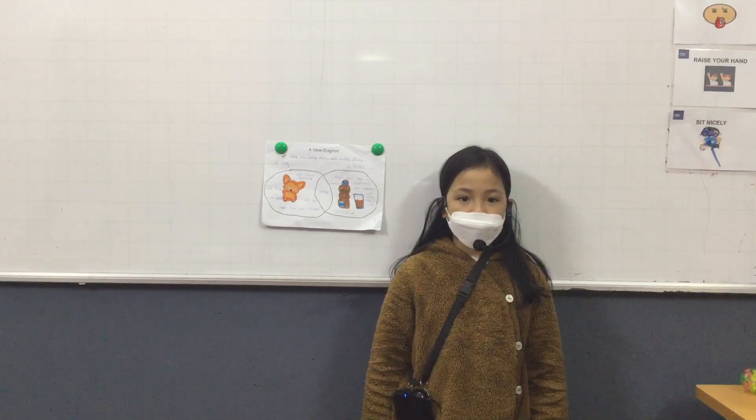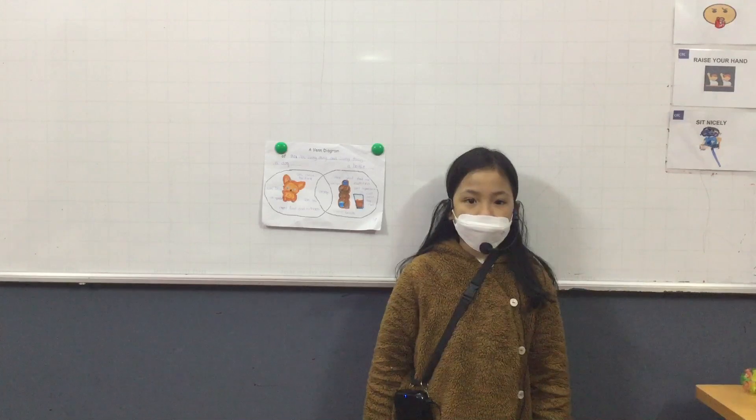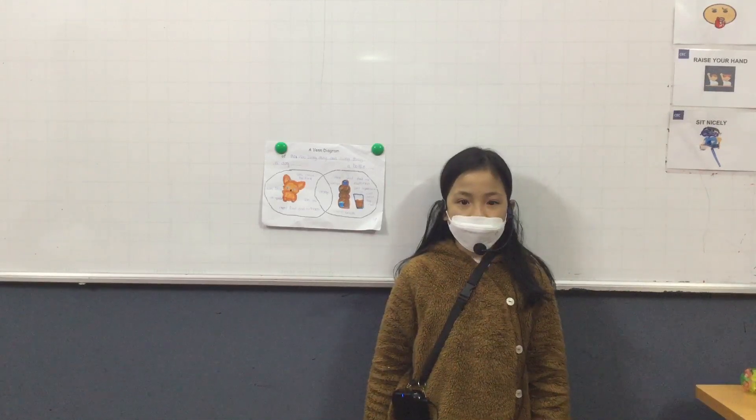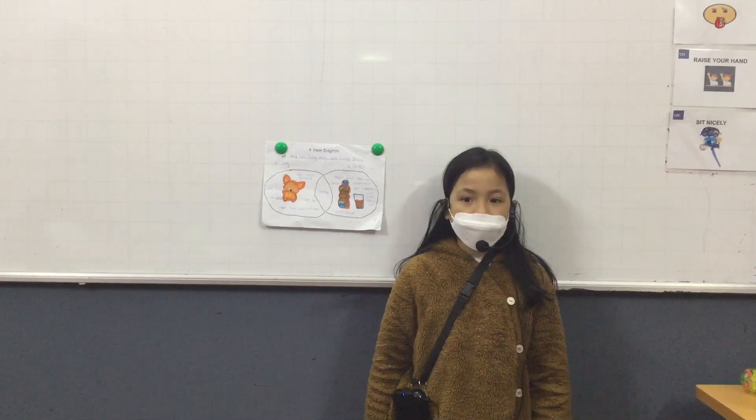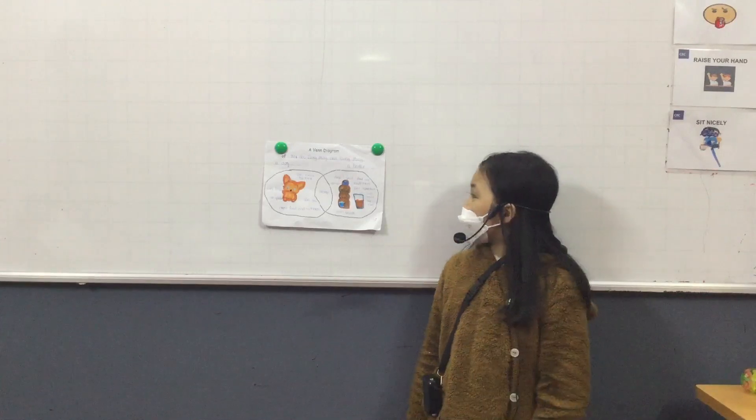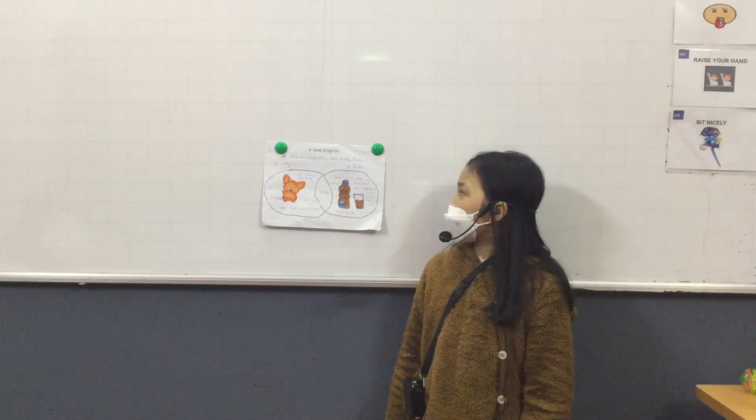This Venn diagram shows the differences and similarities between non-living things and living things. The living thing is a dog and the non-living thing is a bottle.